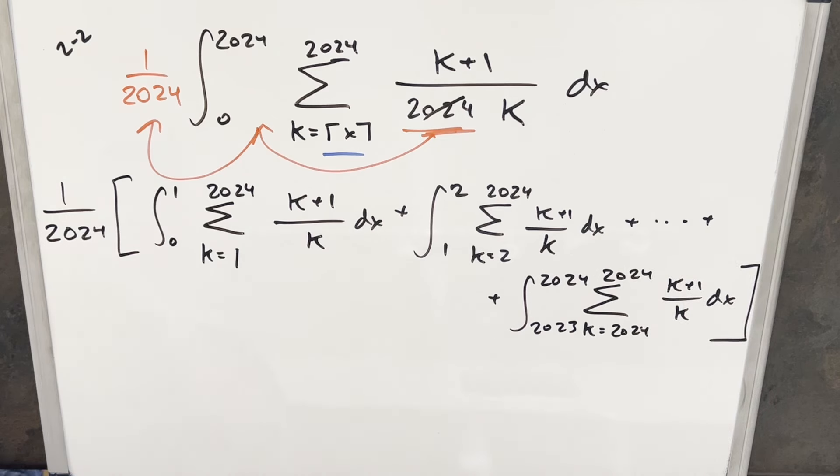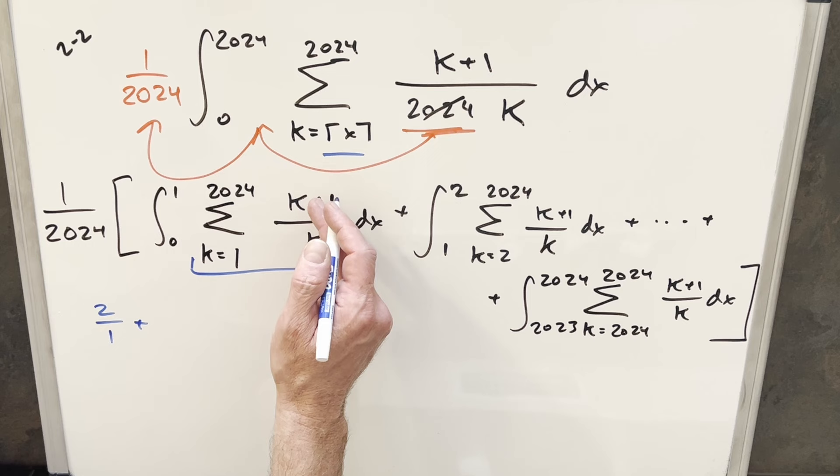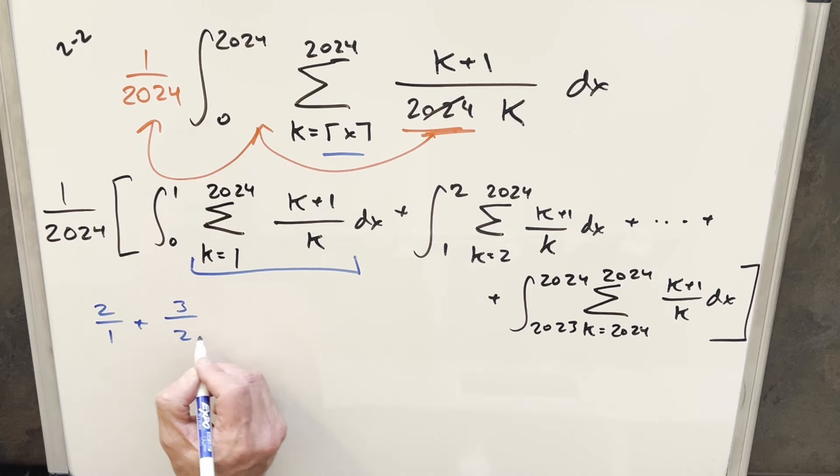Now from here, what I want to do is just get a sense of this sum. Let's just start with this one right here. So when we look at this, our k values are going from one to 2024. So let's just write out some terms and see what's happening. So when we have our k value equal to one, this is going to be two over one. Then for our next term, we plug a two in, we have three over two, and it's just going to keep going like this.